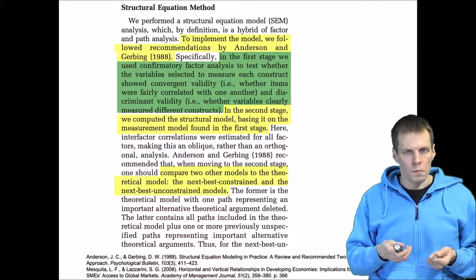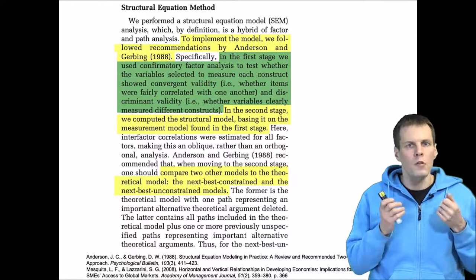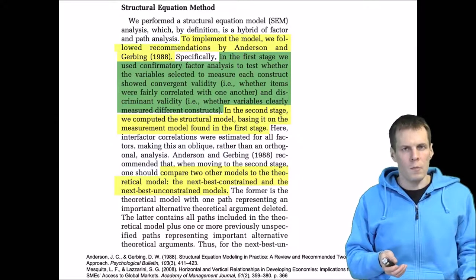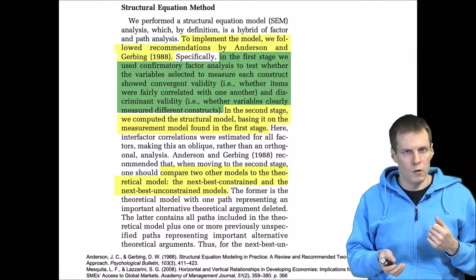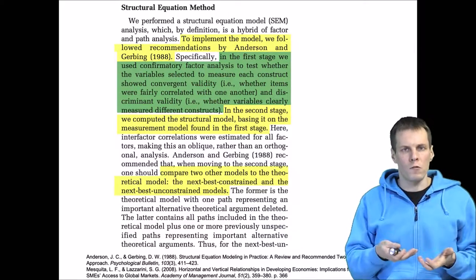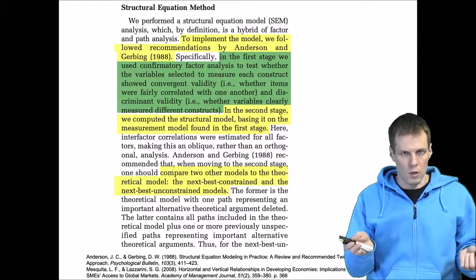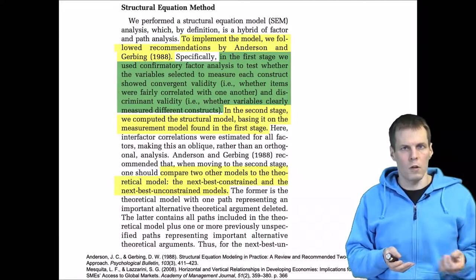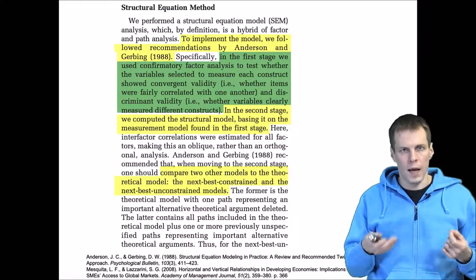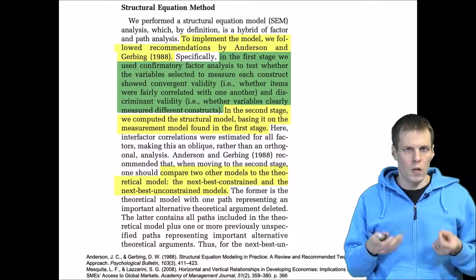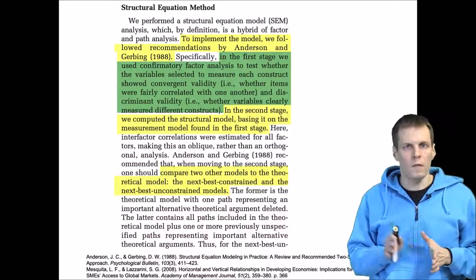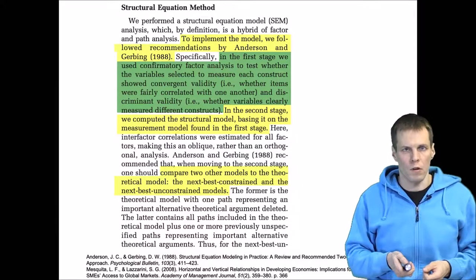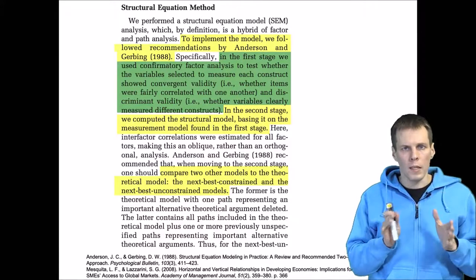If you want to fully follow the Anderson-Gerbing approach, you need to estimate at least two alternative models. You need to estimate a more parsimonious model where you take something away from the theoretical model — constraining some paths to zero — and demonstrate that removing paths causes the model to misfit. You also estimate a less constrained model where you add paths, and demonstrate that adding those paths does not decrease model fit in any meaningful way. So the full two-step approach involves confirmatory factor analysis followed by at least three separate structural regression models, tested using the chi-square test.